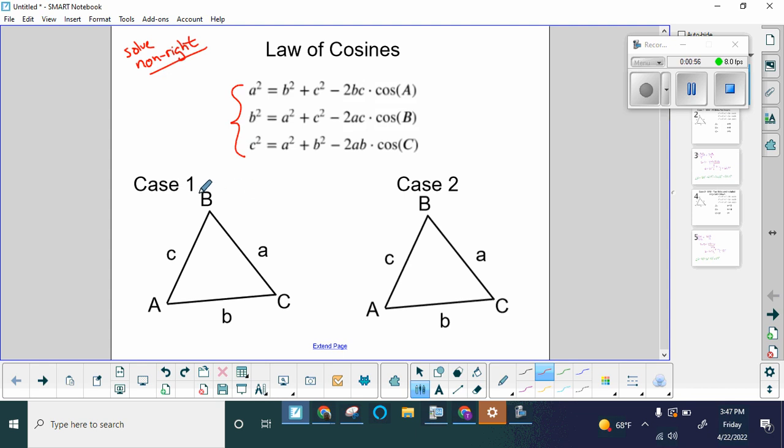Which really brings us to a very big question here of when do we use them. There's two cases that the law of cosines becomes useful. Case one is if you have three sides. All sides are known. When all sides are known, you can pick whatever angle you want to find.